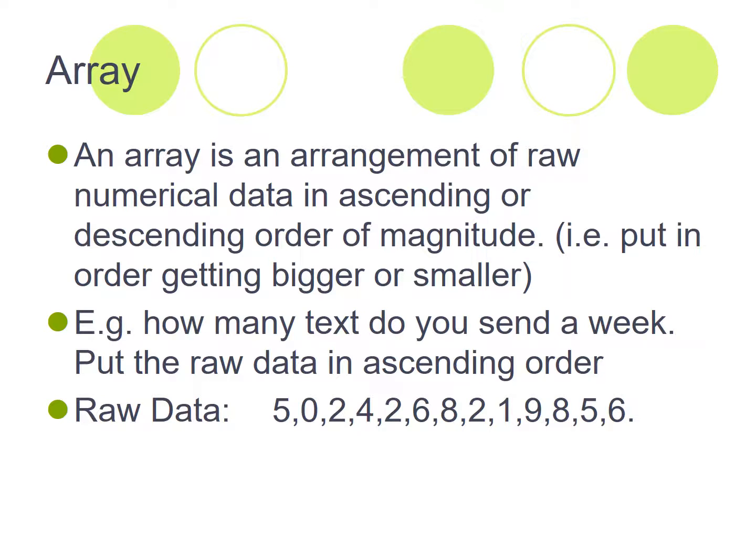So for example in the last slide we looked at how many texts people were sending per week. The raw data was here starting off with 5, 0, 2, 4, 2, 6, 8. There's no order to these, and then creating an array is just putting these numbers in numerical order.